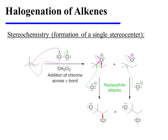The chlorine that has been added to the substrate could be added from above or from below. Each of these two enantiomeric chloronium ions will then be attacked by chloride. Chloride is drawn to the center that bears a greater partial positive charge, and that is the more highly substituted center. So in each instance, chloride attacks the tertiary carbon of the chloronium ion.